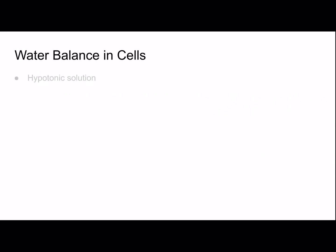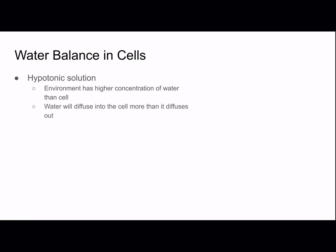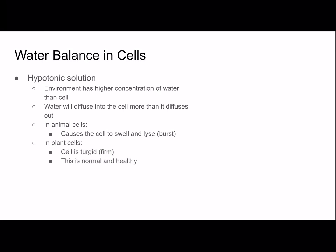Water balance in cells: Hypotonic solutions are where the environment has a higher concentration of water than the cell, so water diffuses into the cell more than it diffuses out. In animal cells this causes the cell to swell and lyse — meaning it bursts. In plant cells the cell becomes turgid, which means firm, and this is normal and healthy for plant cells, which have a cell wall in addition to a plasma membrane.